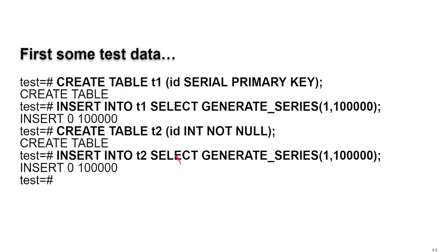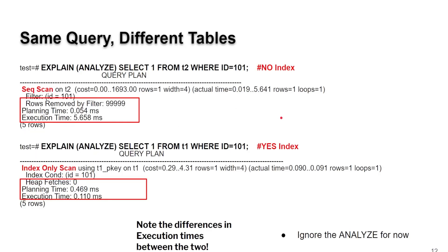Let's create two tables: T1 and T2. Both have one column, ID. The first has a serial data type and is marked as the primary key. The second just has ID as an integer, NOT NULL. Into both tables, we insert numbers 1 to 100,000. Now if we run the same query — SELECT the first column from that table WHERE ID equals 101 — when there's no index, we get a sequential scan (table scan). When there is an index, Postgres reads the information just from the index without diving into the data itself.